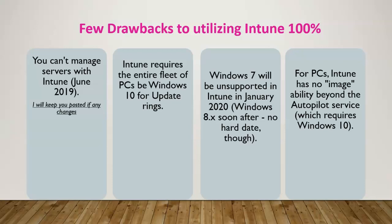Intune requires the entire fleet of PCs to be on a specific Windows 10 ring — whether semi-annual or a more frequent ring — that ring should be consistent across the fleet. Otherwise you can't push updates to a specific subset of them. You can address this by creating dynamic AD groups, but you need to properly segregate your Windows 10 devices the right way.